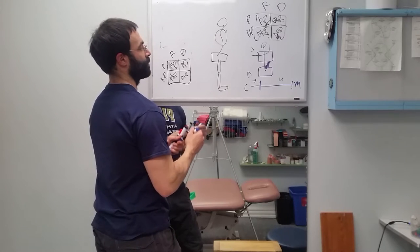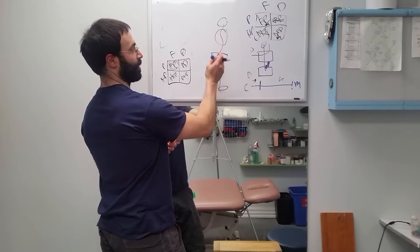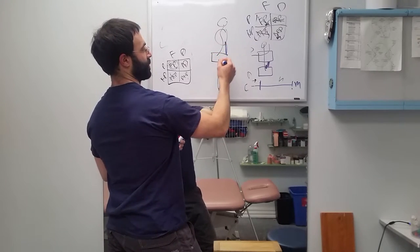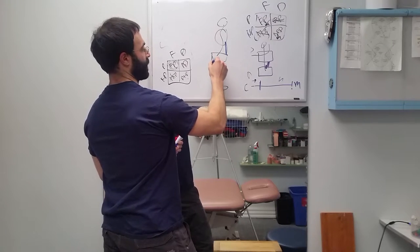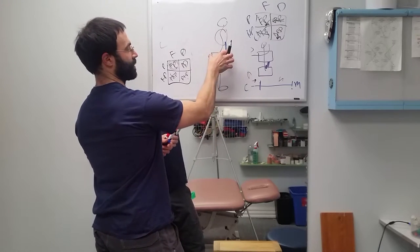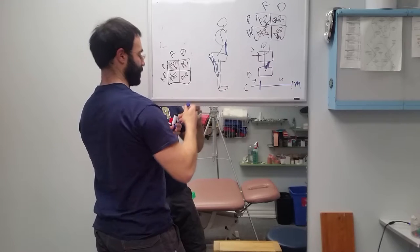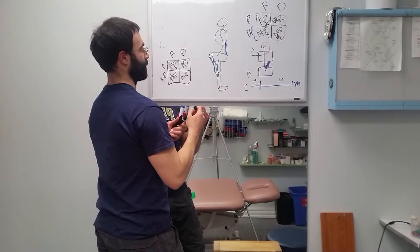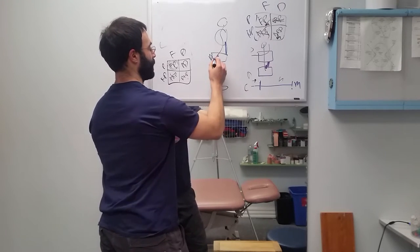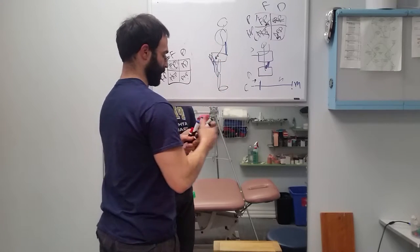The main muscles driving through this to control our posterior pelvic tilt would be the abdominal musculature on the front, our hamstring, and some of our glutes on the back. So when these guys contract, we get a backward rotation—our posterior pelvic tilt.